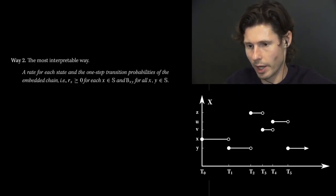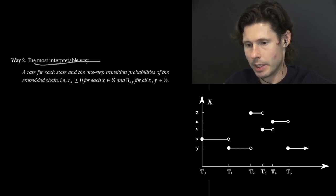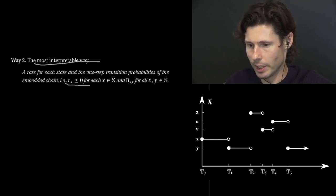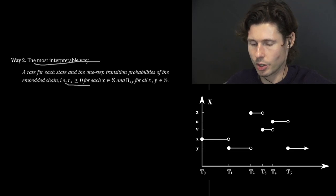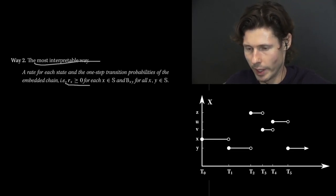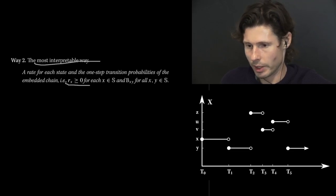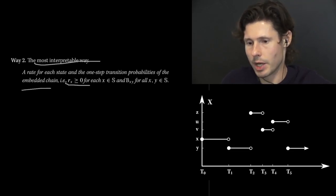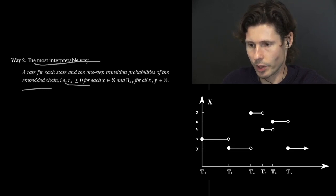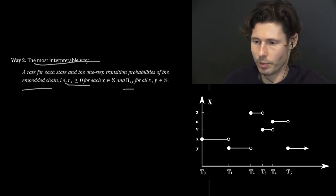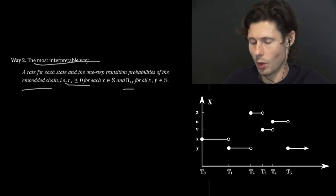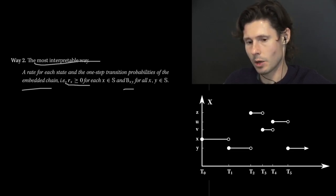For this, we have way two — the most interpretable way. For every single state, you're going to have a rate. This number determines the waiting time distribution: the distribution is exponential with rate rx in that particular state. And then the embedded chain tells us where to go — with probability bxy, when we switch states, we go from x to state y with probability bxy.